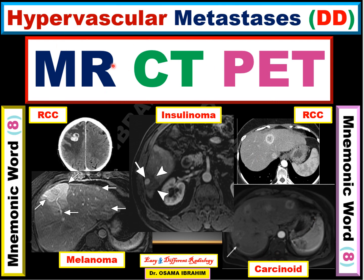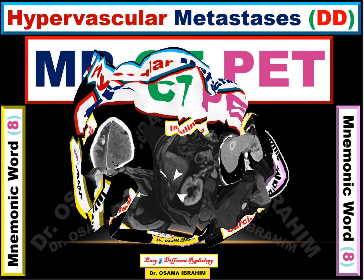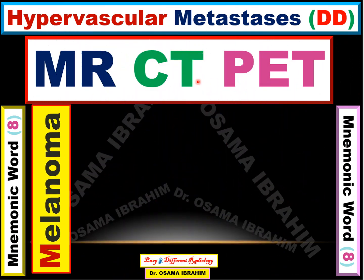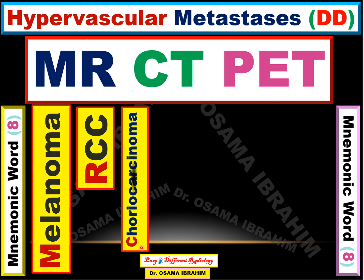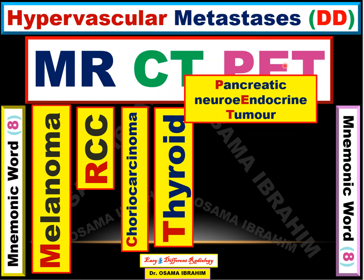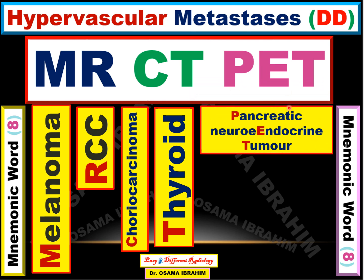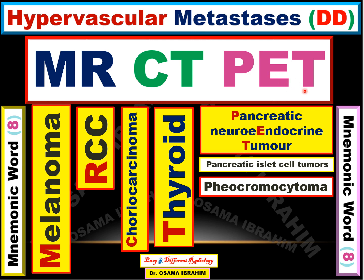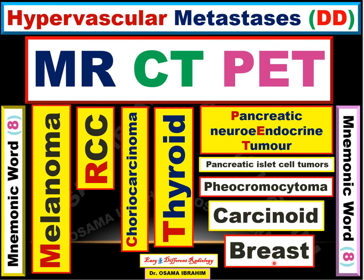Neuroendocrine tumor is one of the causes in MRCT PET, causing hypervascular metastasis. By another diagram: to remember the causes of hypervascular metastasis, MRCT PET also represents different modalities in radiology — MRI, CT (computed tomography), magnetic resonance imaging, and PET (positron emission tomography). M is from melanoma, R from renal cell carcinoma, C from choriocarcinoma, T from thyroid tumor, and PET represents pancreatic neuroendocrine tumor or any neuroendocrine tumor — most likely pancreatic islet cell tumor like insulinoma, pheochromocytoma, other neuroendocrine tumors, carcinoid — and also a small percentage of breast cancer can cause hypervascular metastasis.